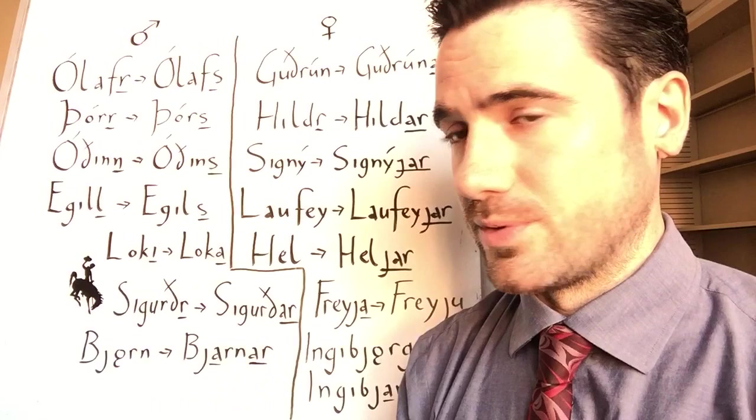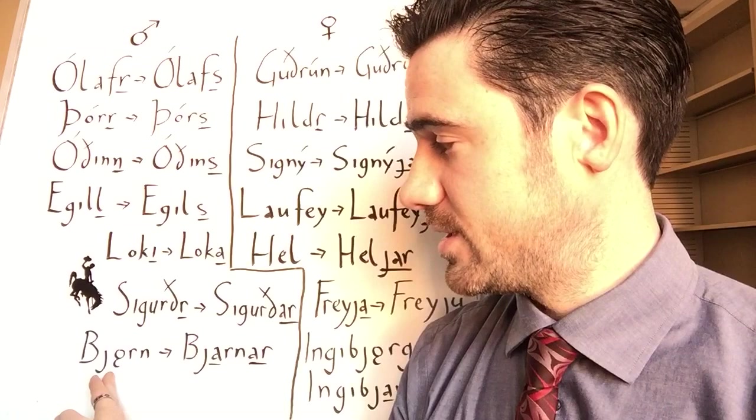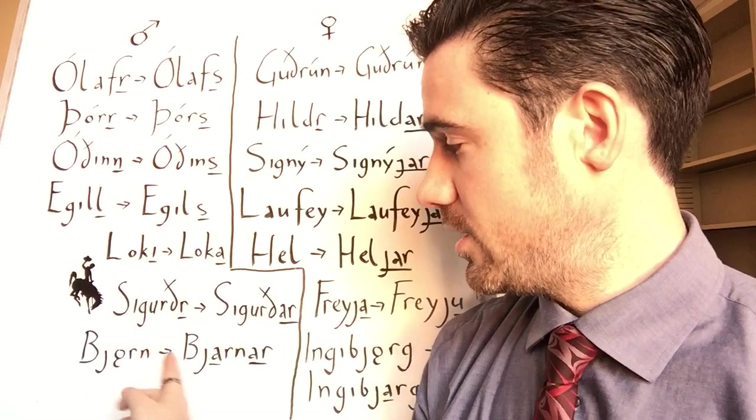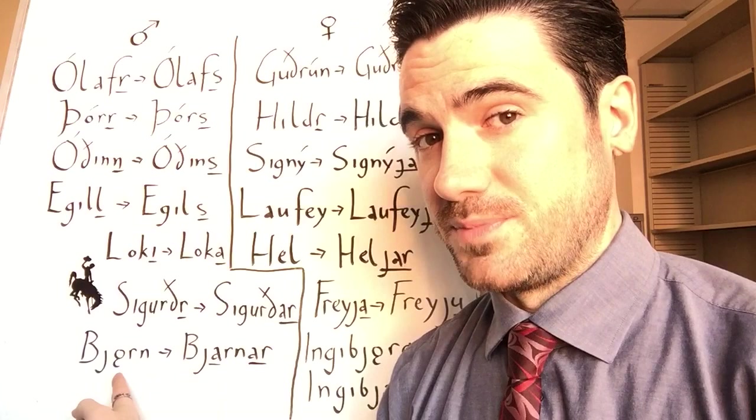Keep an eye out for names that have this vowel, O-umlaut. This is always caused by a vowel mutation by a U that used to be there. In modernized text, this may be printed as an O with two dots over it. Names with this vowel, whenever they add the A-R ending, will see that vowel turn back into an A. So from Björn to Bjarnar for the possessive form. So Bjarnar means Björn's.